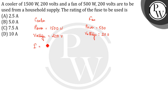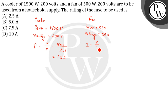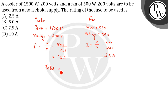For the cooler, current equals power divided by voltage, which is 1500 divided by 200, giving us 7.5 amperes. Similarly, for the fan, current equals power divided by voltage, which is 500 divided by 200.